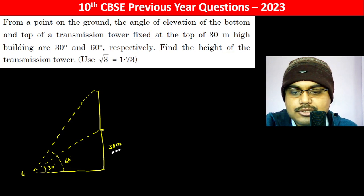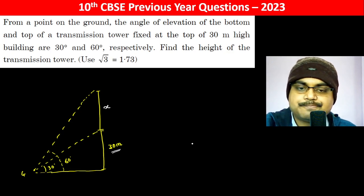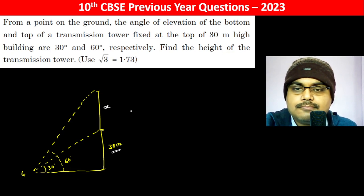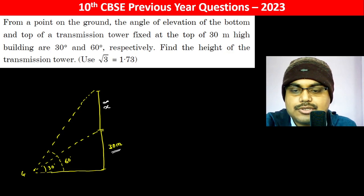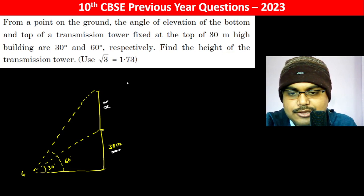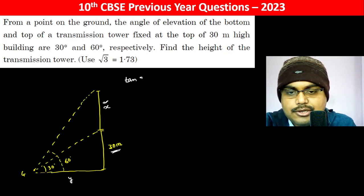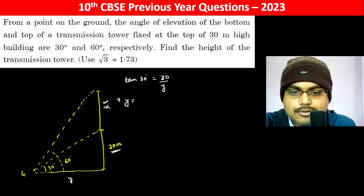So this is 30 meters. If we take x as the height of the tower, then tan(30°) = 30 divided by y, so y becomes 30 divided by tan(30°), which equals 30√3 meters.